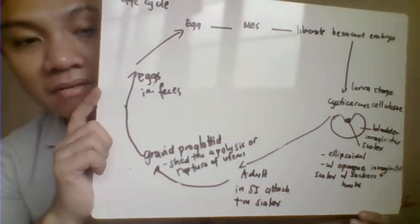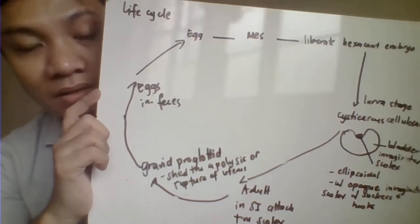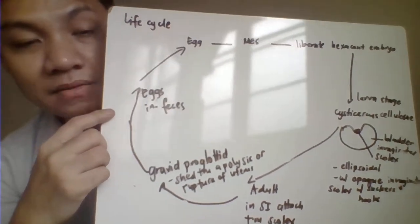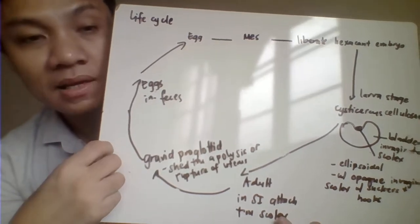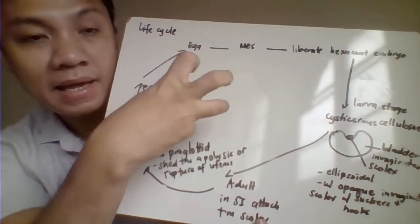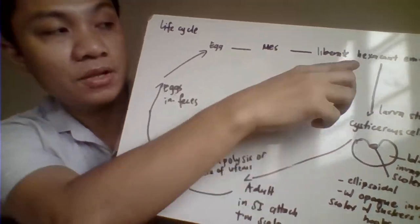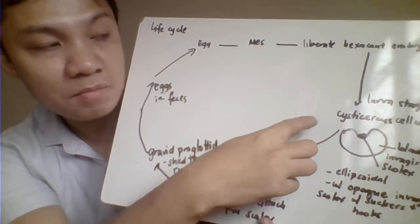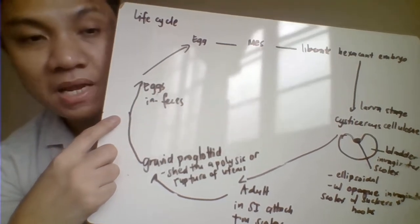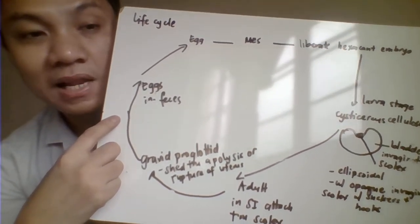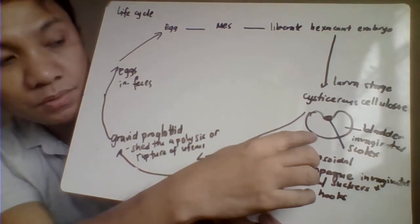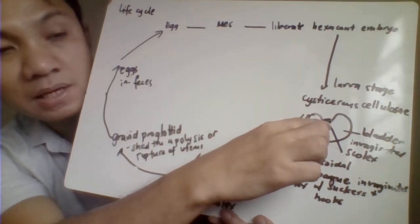The gravid proglottids contain fewer than 14 uterine lateral branches, which differentiates Taenia solium from its counterpart Taenia saginata, which has more than 14. The eggs have a characteristic striated eggshell with a hexacanth embryo inside having six hooklets. The life cycle begins with ingestion of the egg. Inside the small intestine, the hexacanth embryo hatches and develops into the larval stage called the cysticercus cellulosae — a bladder worm with an invaginated scolex inside.